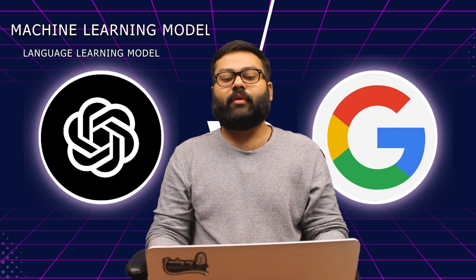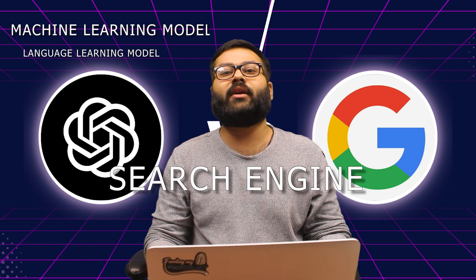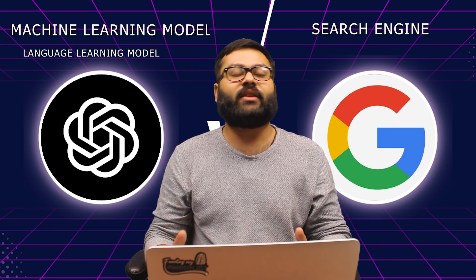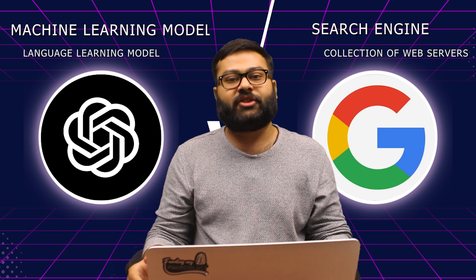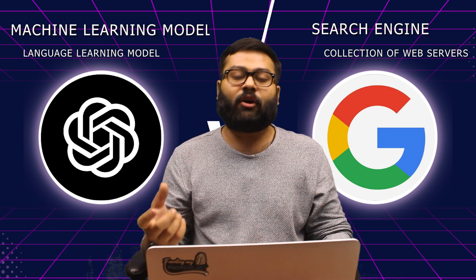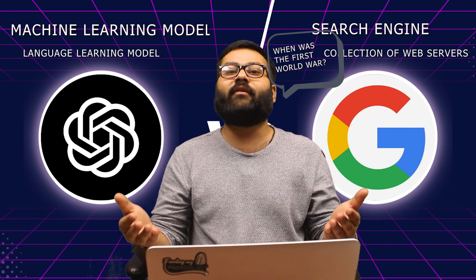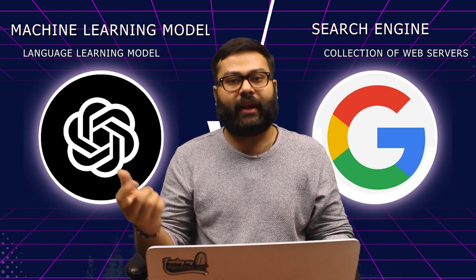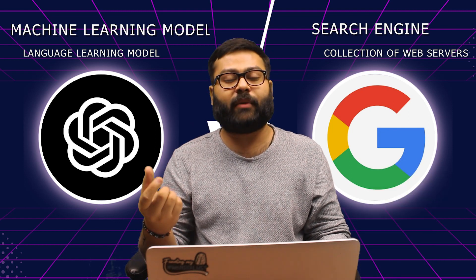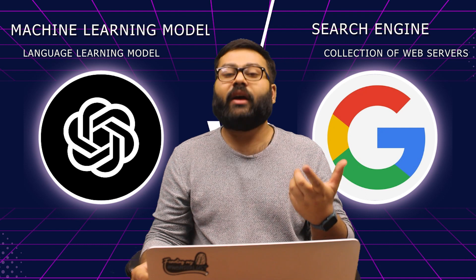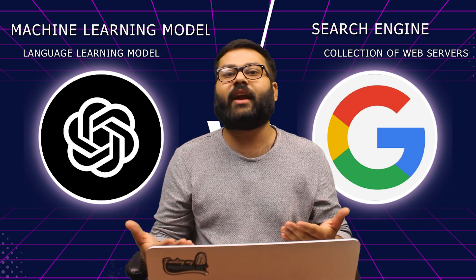Now let's look at what the Google search engine is. Google search engine is essentially a collection of web servers where you put in queries and it gives you responses in the form of HTTPS links — meaning it provides you with links to pages containing your information. For example, if you ask when the First World War was, it might give you the HTTPS link of a Wikipedia page. So Google gives you a response in the form of a link, whereas ChatGPT generates a direct answer in a format understandable by humans.